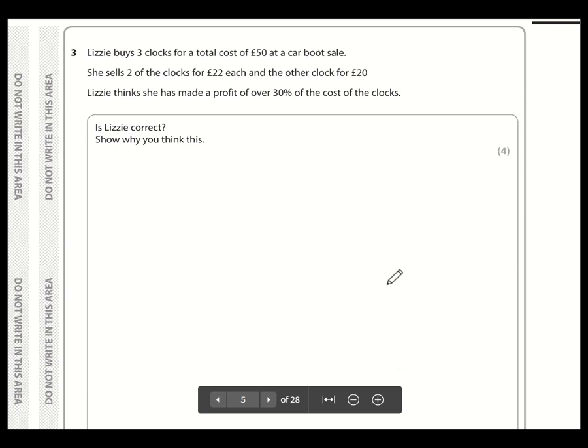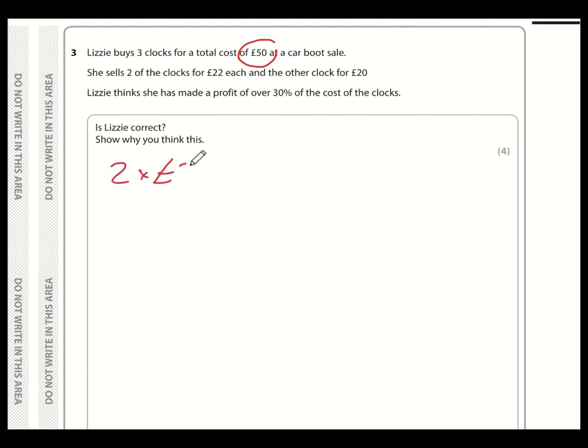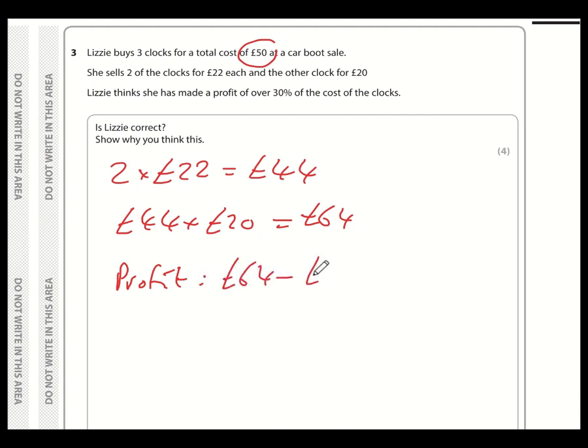Question number three. So the first thing we're going to do is work out, well, we know that she's bought the clocks for 50. What has she sold them for? Well, that's 2 times 22, which is 44. And another one for 20, so 44 plus 20, which is 64 pounds. So the profit she's made is 64 pounds, take away 50 pounds, which is 14 pounds.